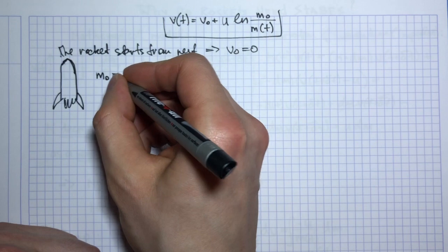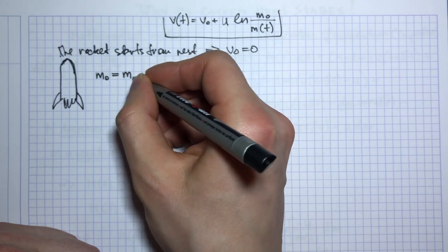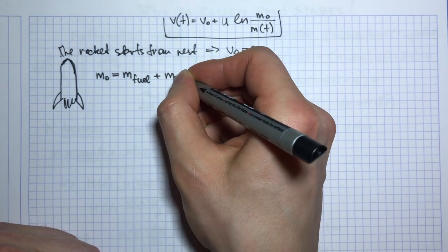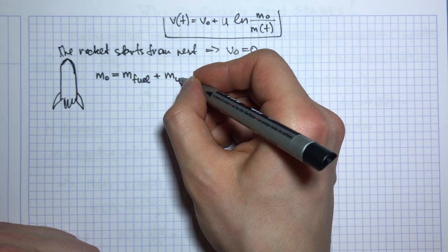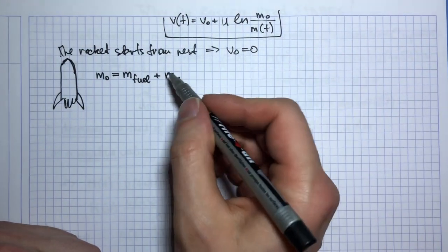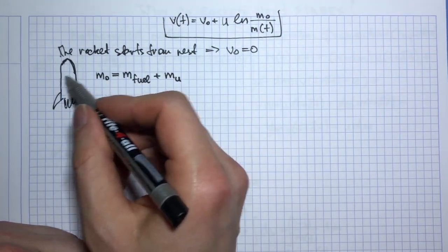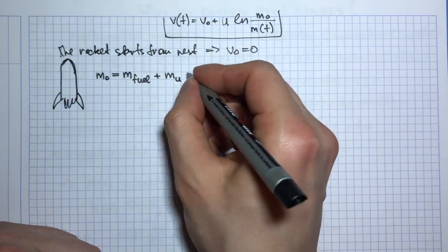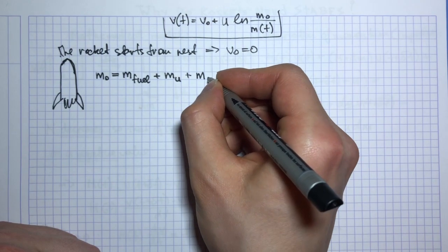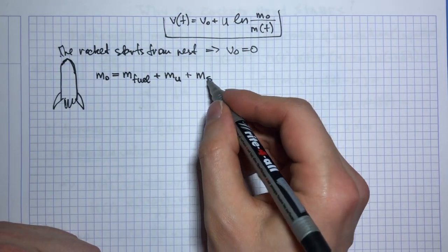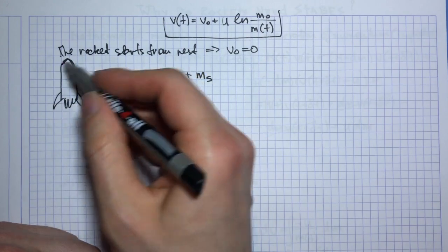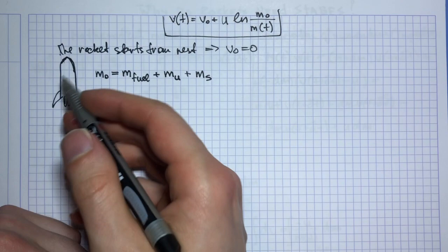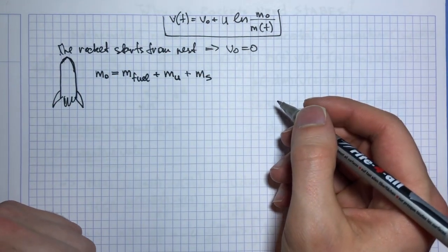Now let's think about m0, the different parts that the rocket is composed of. So m0 is the total mass, it's composed of mass of the fuel, we also have useful mass meaning the mass of the satellite or something that the rocket needs to bring to orbit or to outer space, and then the structural mass, the mass of the rocket due to its structure, due to the metal and the materials.